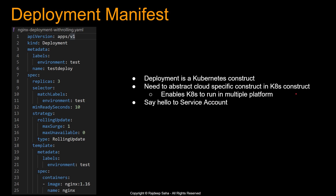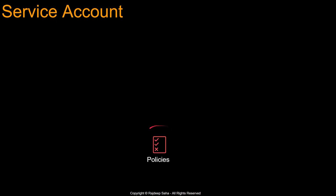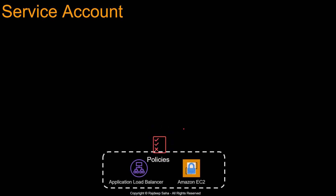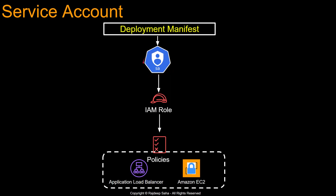So you need a layer in between — say hello to service account. First, you have policies which allow access to certain resources, and then you attach those policies to an IAM role. Then you associate this IAM role to this Kubernetes concept called service accounts, and this service account can be associated to a deployment manifest. This is quite powerful — depending on your application, you can associate different IAM roles doing different things.